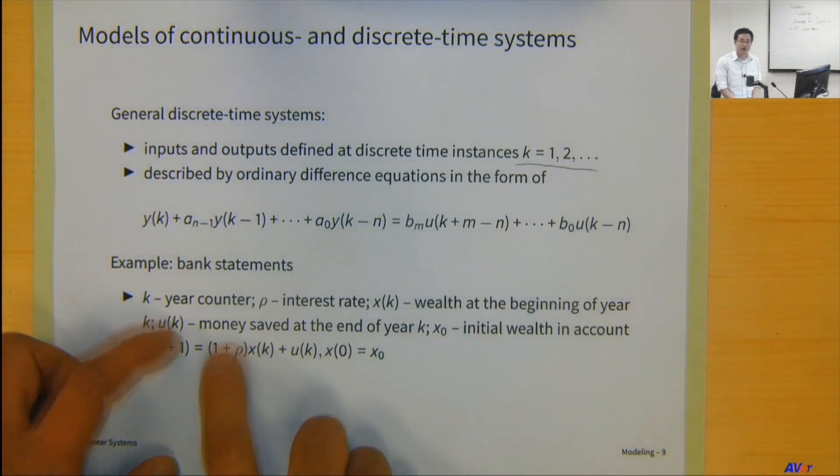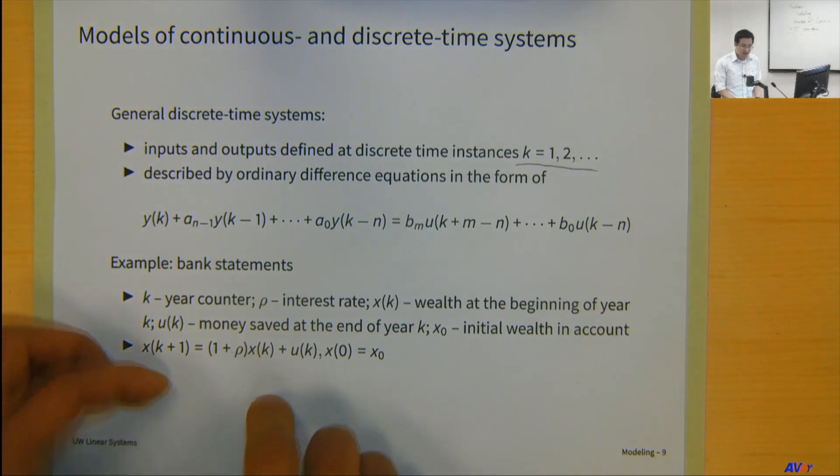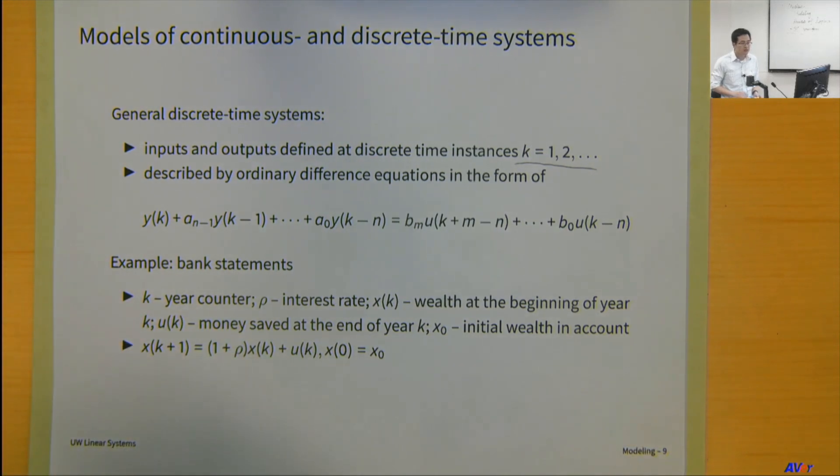This is pretty important. If you think about, let's say, how your interest increases in the bank, this is an entire discrete time system. You have the annual percentage APR, annual percentage rate, which is defined yearly. You don't do second percentage rate. It wouldn't make sense. The bank wouldn't do that.